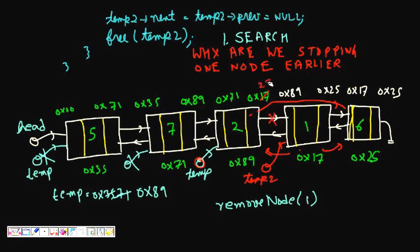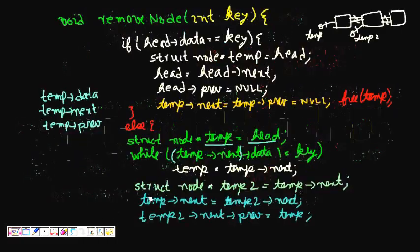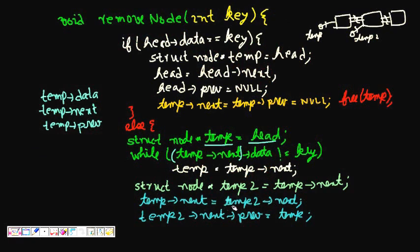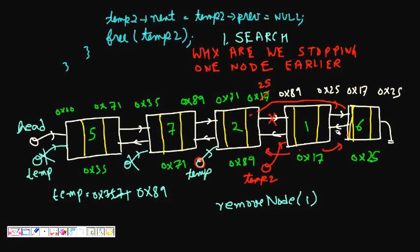Now temp->next is 0x25. Then we need the node after the deleted node's previous pointer to point to temp instead of node 1. To do this: temp2->next->prev = temp. temp2->next is that node and its previous now becomes equal to temp (0x89). So we have made the connection between the previous and next nodes of node 1.